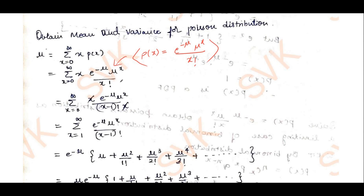We rewrite x factorial as x into (x minus 1) factorial. Cancelling x from numerator and denominator, we are left with e to the power minus mu into mu to the power x, divided by (x minus 1) factorial. If we put x equal to 0, we get minus 1 factorial, which is not defined.